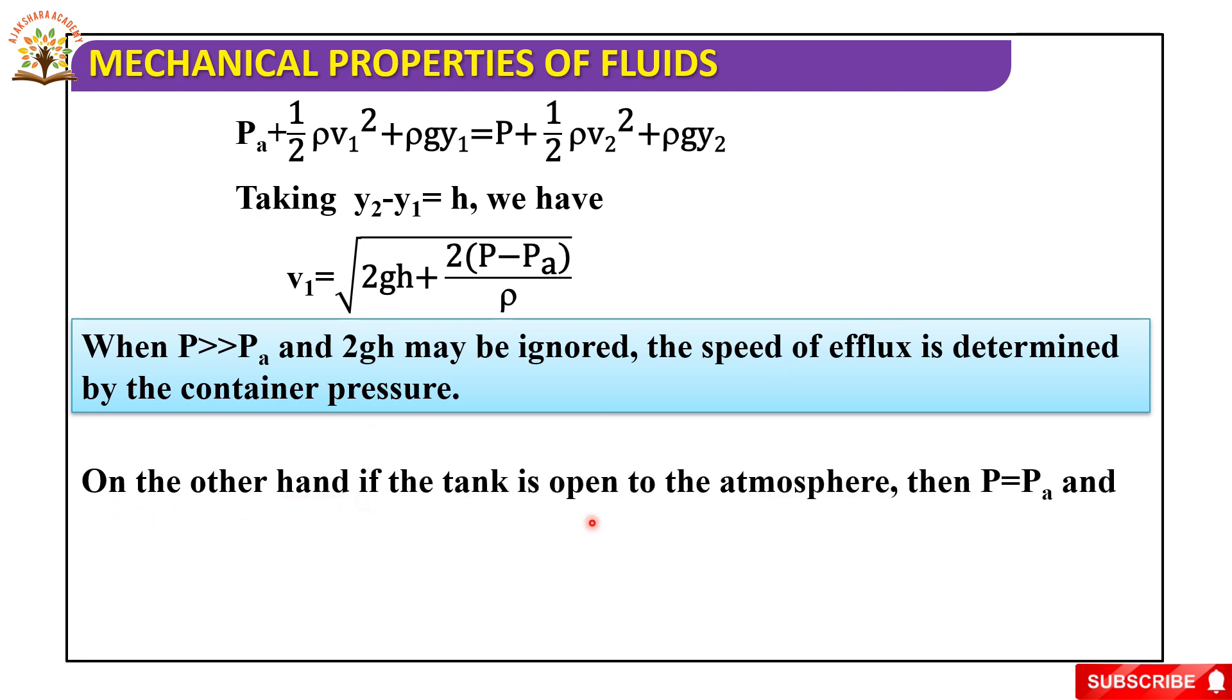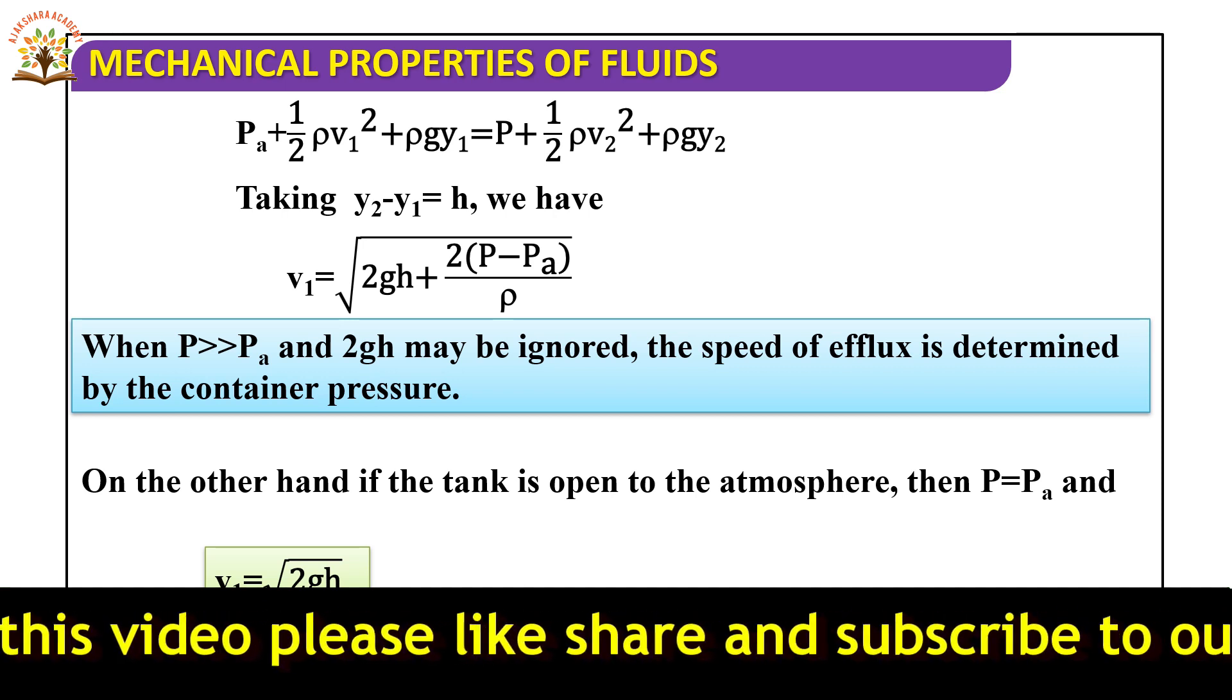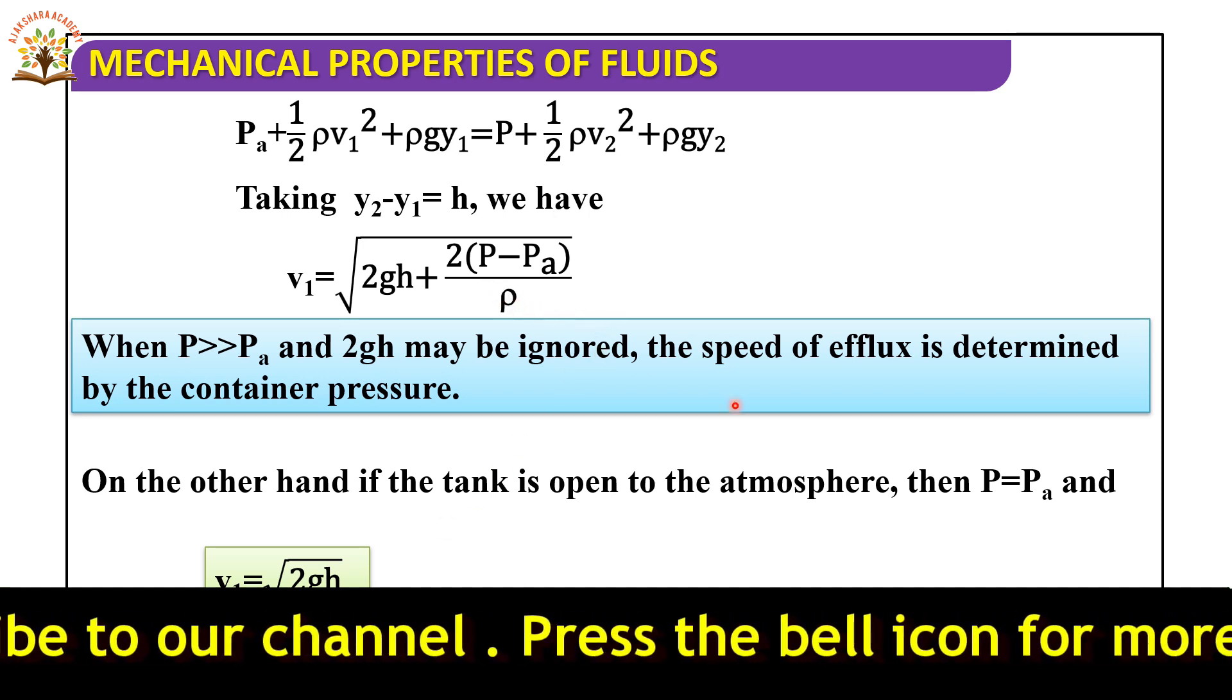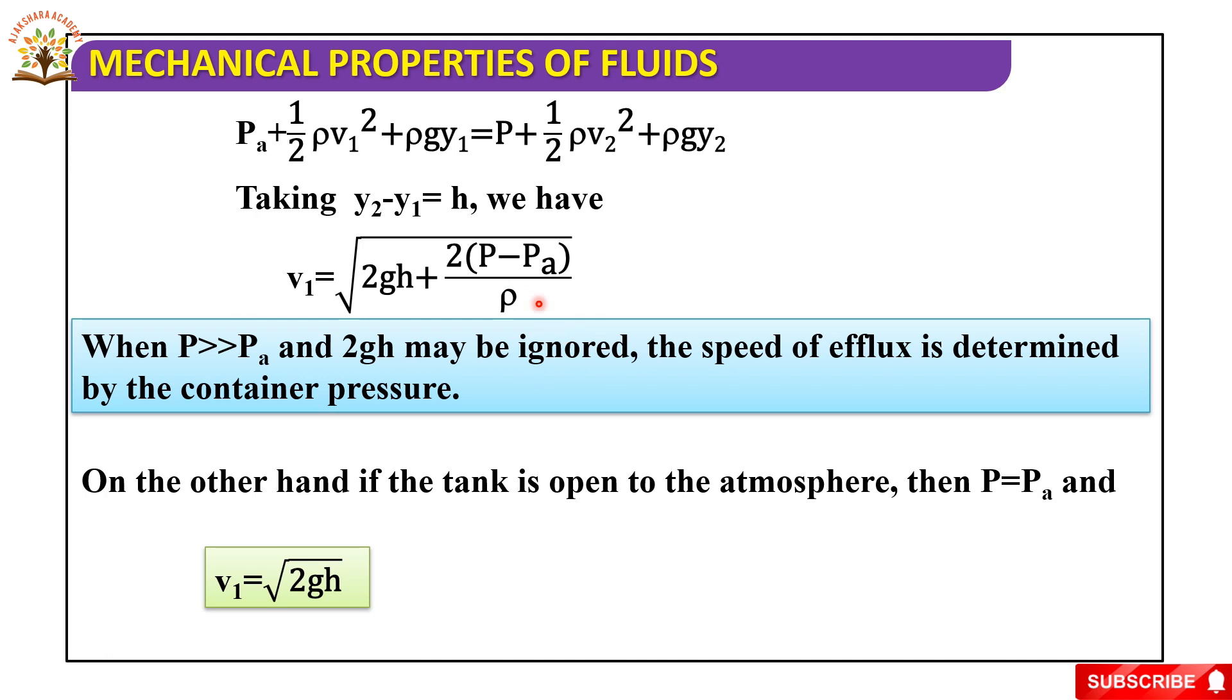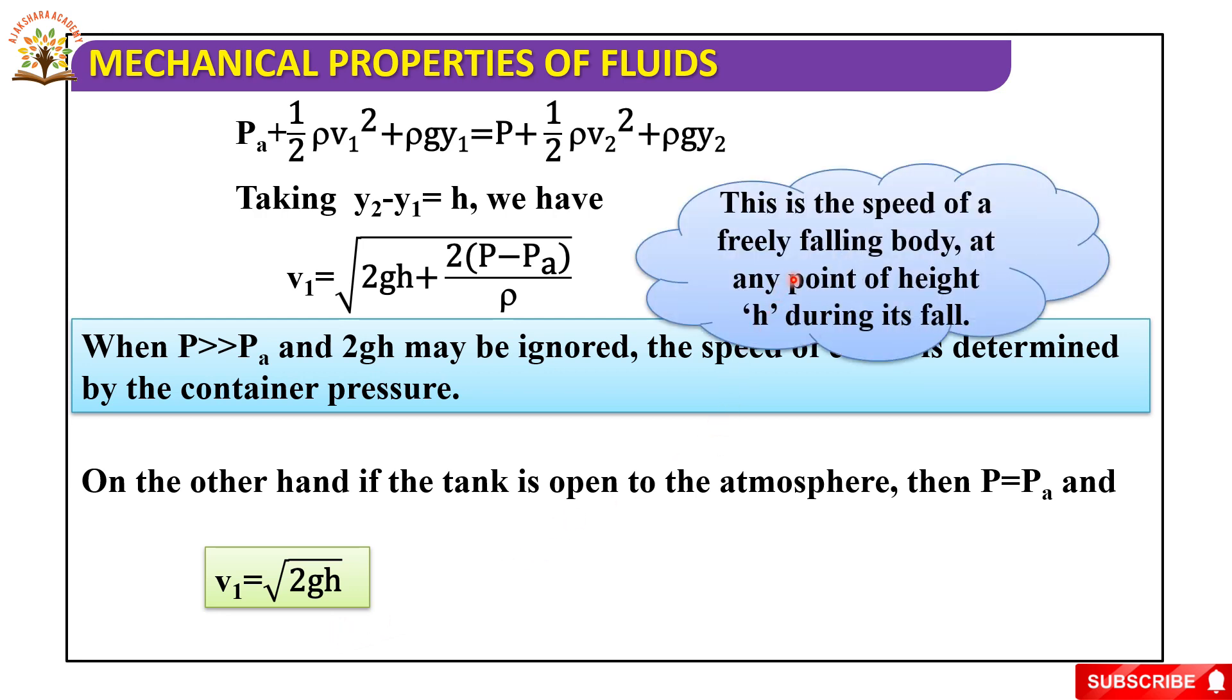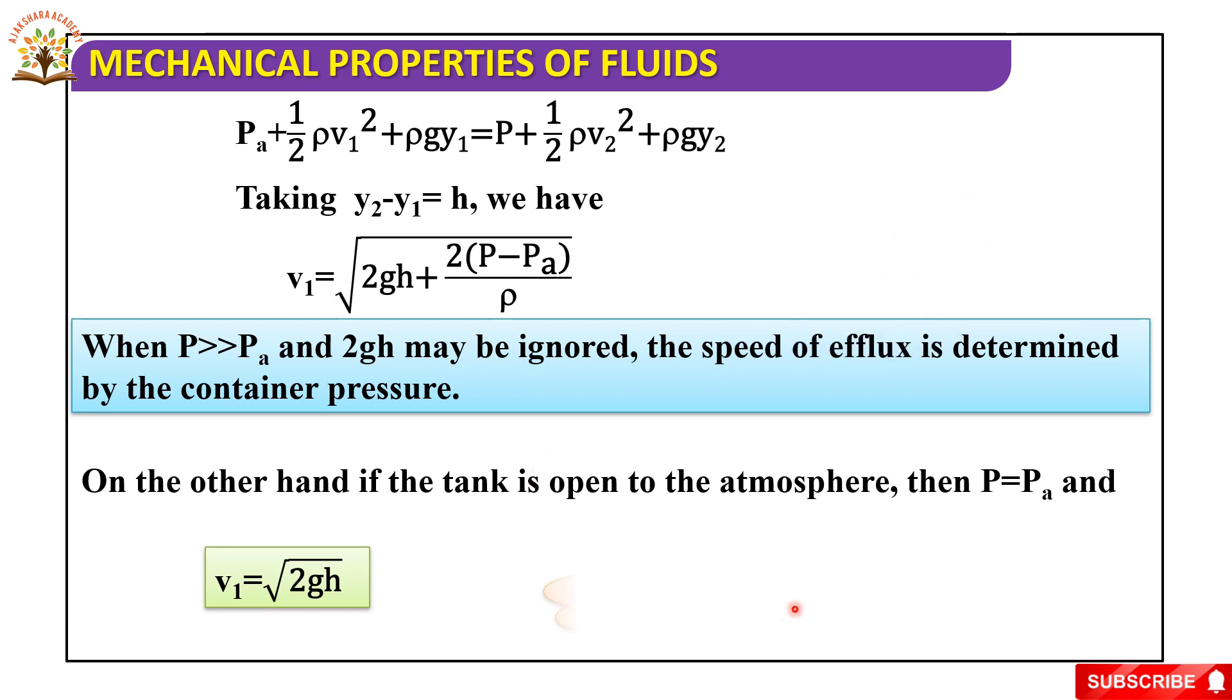On the other hand, if the tank is open to the atmosphere, then p equals pa and v1 equals square root of 2gh. Here, in this case, in the place of p, you can substitute pa, then it becomes pa minus pa equals 0. So, the remaining equation is v1 equals square root of 2gh. This is the speed of a freely falling body at any point of height h during its fall.